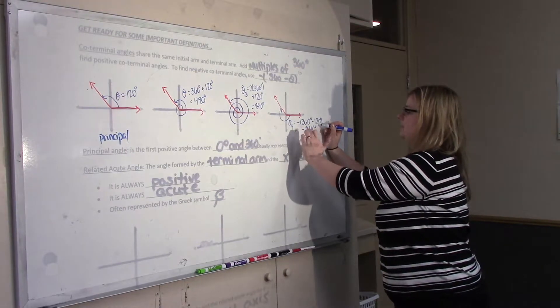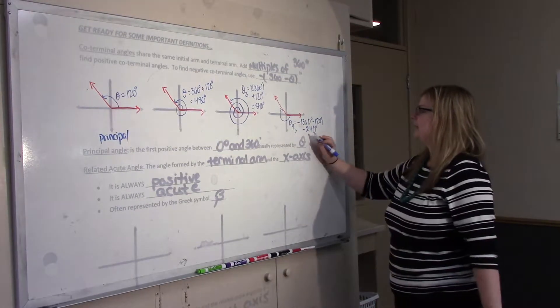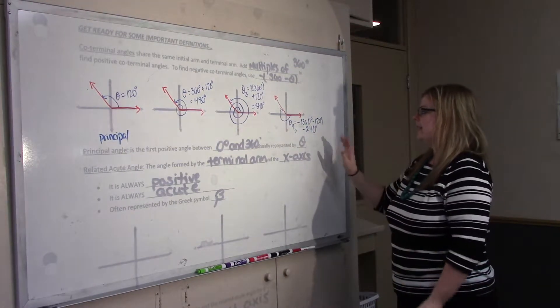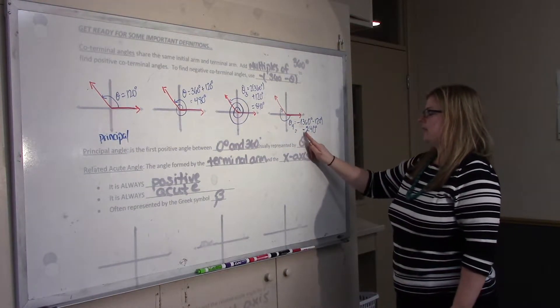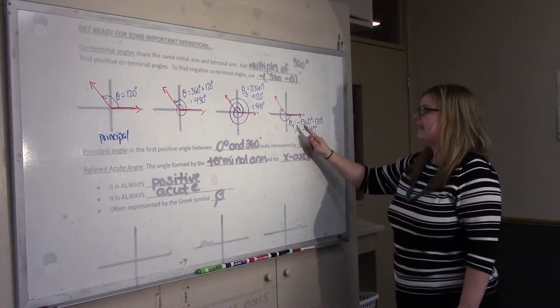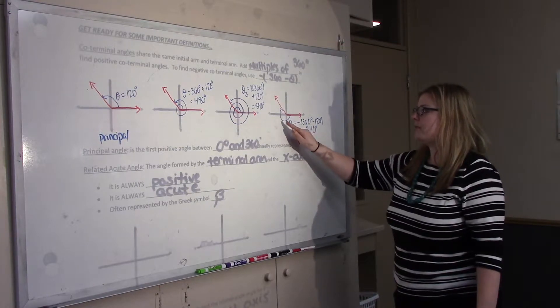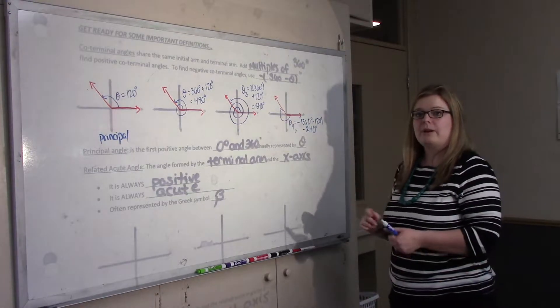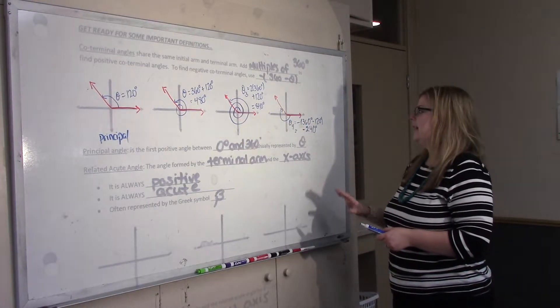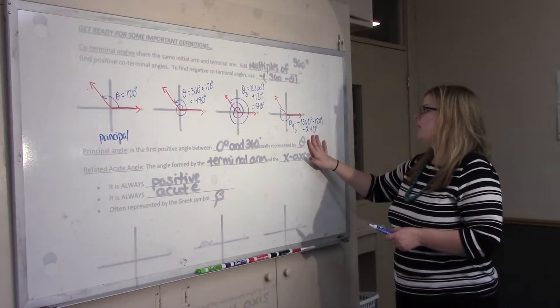I didn't mean to draw a negative sign twice. Negative 240 degrees — the negative is because it's going in the clockwise direction, and 240 is what's left when you take out the 120 degrees.